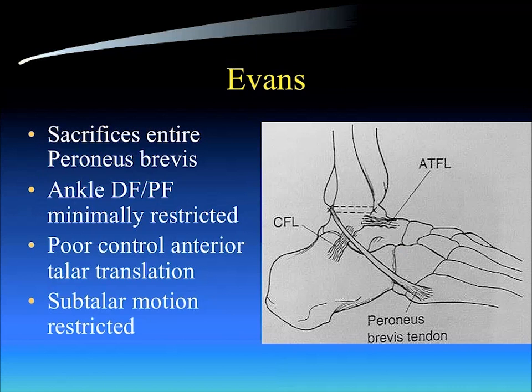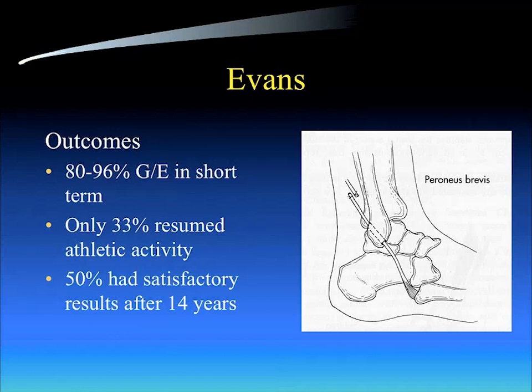The Evans procedure sacrificed the entire peroneus brevis. You would basically transect the peroneus brevis above the level of the superior retinaculum, drill a hole through the fibula, and reroute the entire peroneus brevis through the fibula. In this procedure, ankle dorsiflexion and plantarflexion are minimally restricted, but you did restrict inversion at the subtalar and ankle level. It had a restraint to inversion but very poor control of anterior talar translation — the so-called anterior drawer.